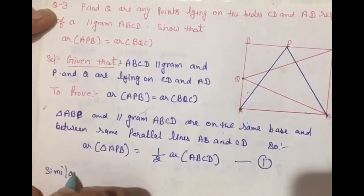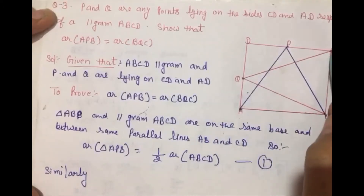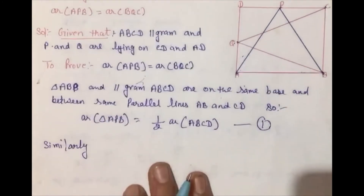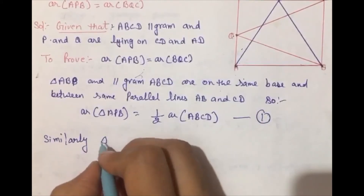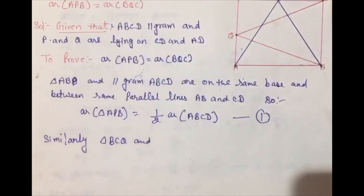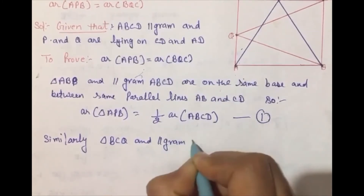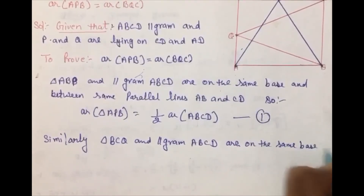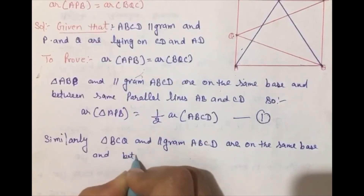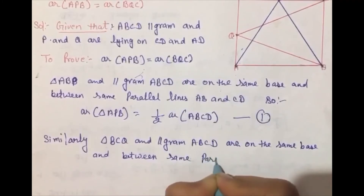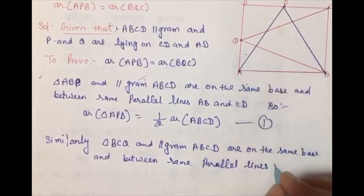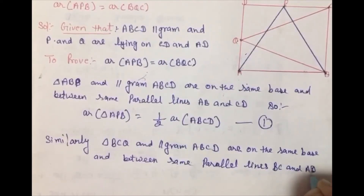Similarly, triangle BCQ और parallelogram ABCD को लें। Same base होगा BC और parallel lines होंगी BC and AD। Triangle BCQ and parallelogram ABCD are on the same base BC and between the same parallel lines BC and AD।